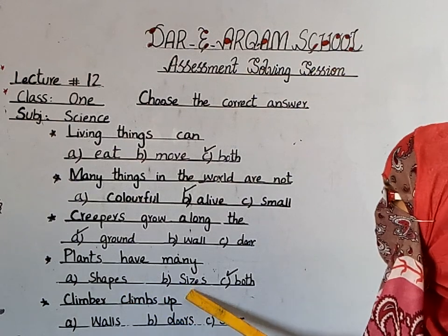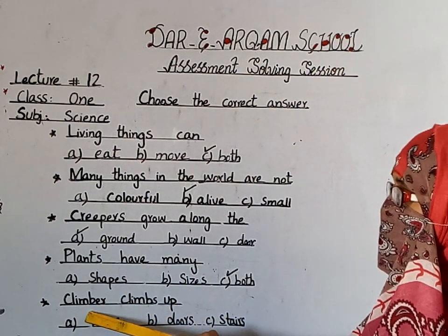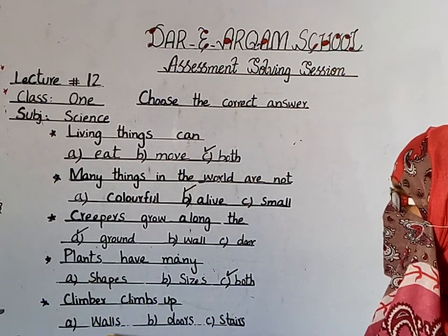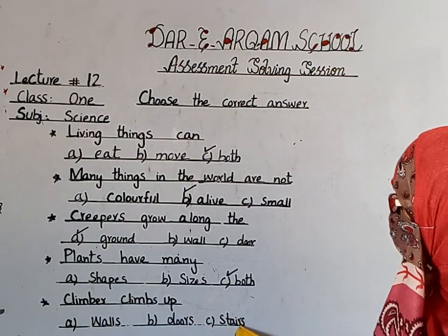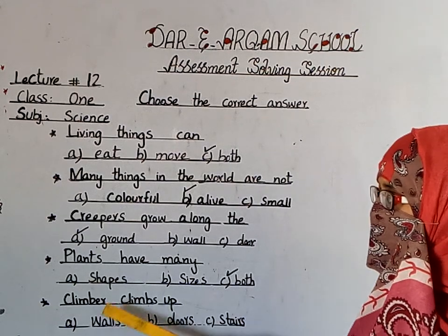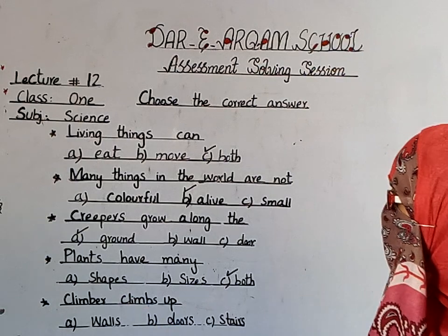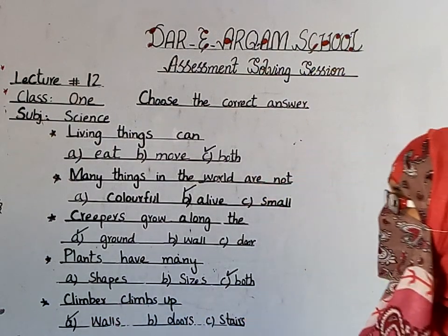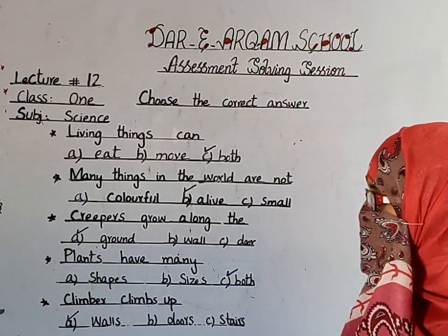Shapes and sizes both. Now, a climber climbs up — a climber is also a plant. What does it climb on? Walls, doors, stairs? Students, what have you read about climbers in your chapter? A climber is a plant that grows on walls, and it can also grow with a tree.